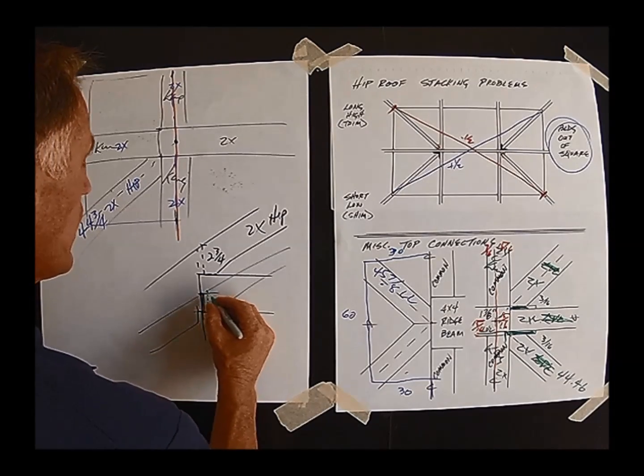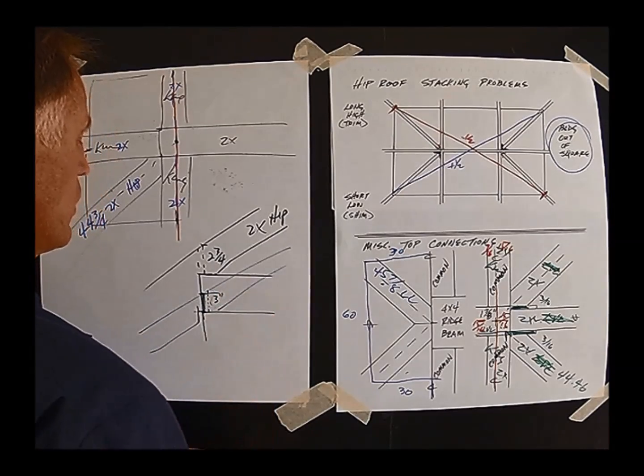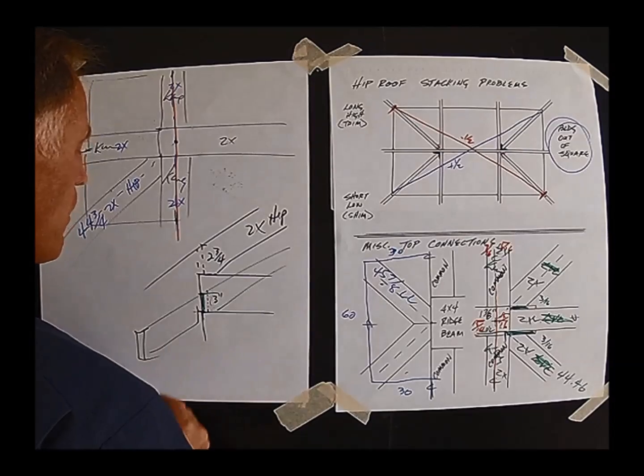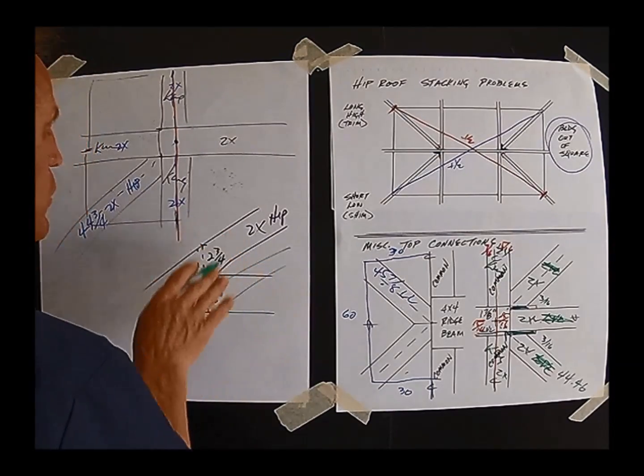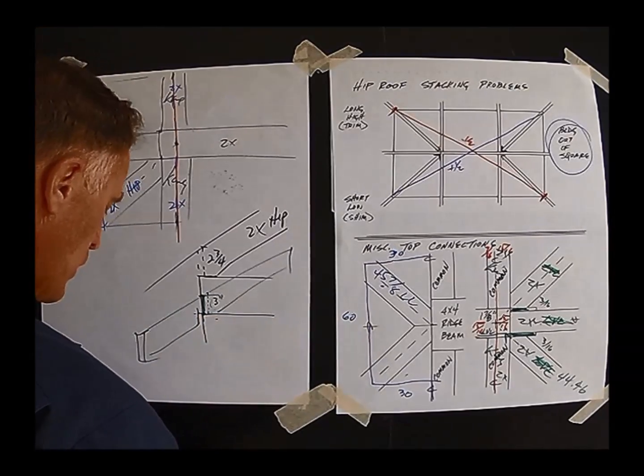Now we're looking at a heel stand of let's say three inches. So we're going to have problems not only in the fascia, we're going to have problems in lining up so the plywood is going to kick up. So it's very important that the bird's mouth be tight on the hips and on the commons.